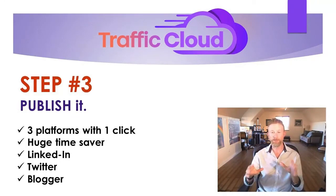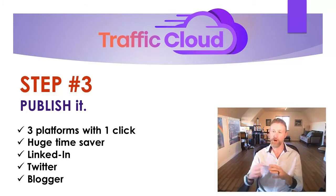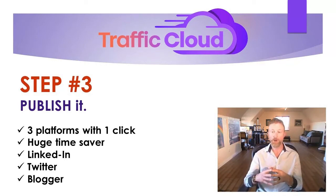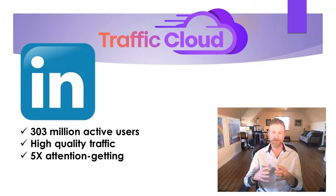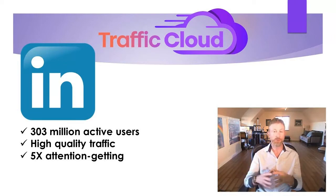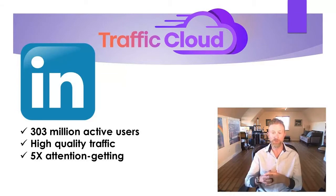Step three: publish it. With one click, you can publish to three platforms at the same time. We chose to focus on some of the high-traffic platforms that are often overlooked by marketers these days, specifically LinkedIn, Twitter, and Blogger. While most marketers are focusing only on Facebook and Instagram, these other platforms are less competitive while driving massive amounts of traffic. LinkedIn has 303 million active monthly users, and the thing you have to realize about LinkedIn is that it's a higher-quality traffic source. Unlike some of the other social sites, LinkedIn has a business focus and is filled with real people. Traffic Cloud is utilizing LinkedIn in a way that most people are not, by creating visual posts that are five times more likely to get people's attention.